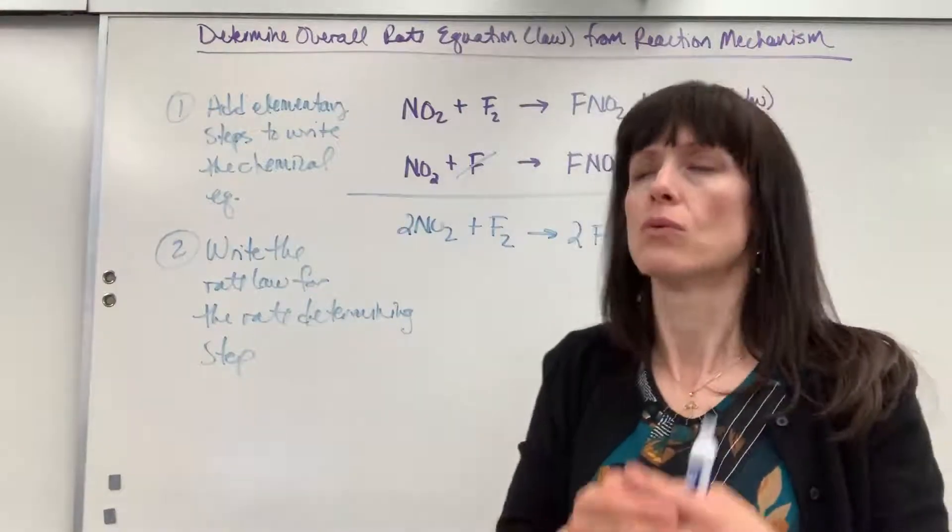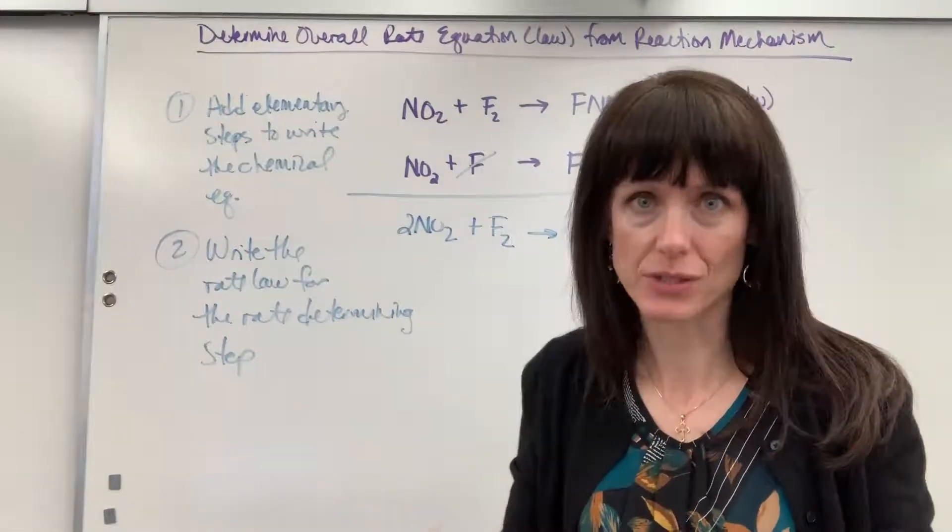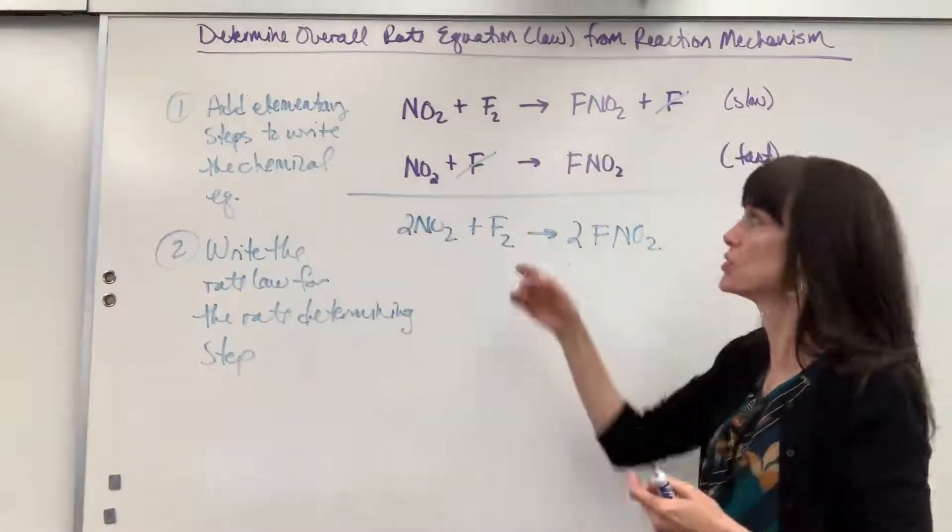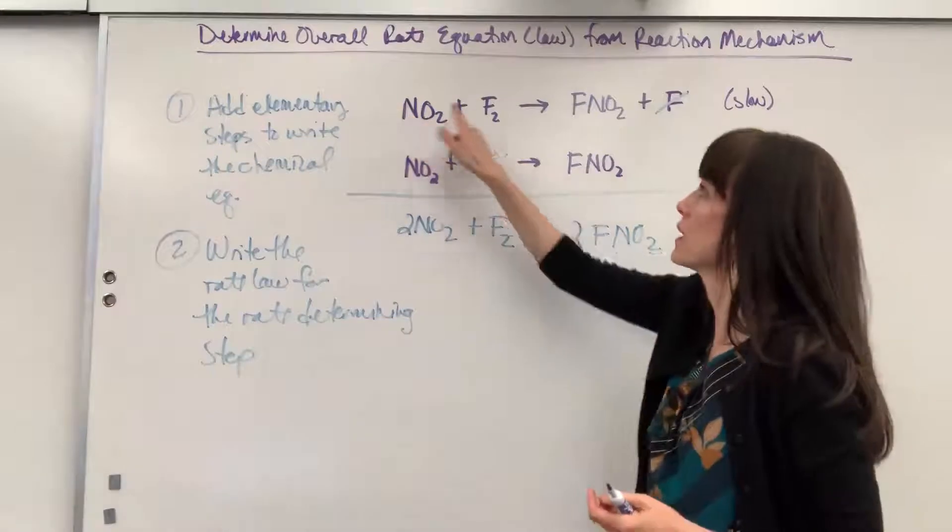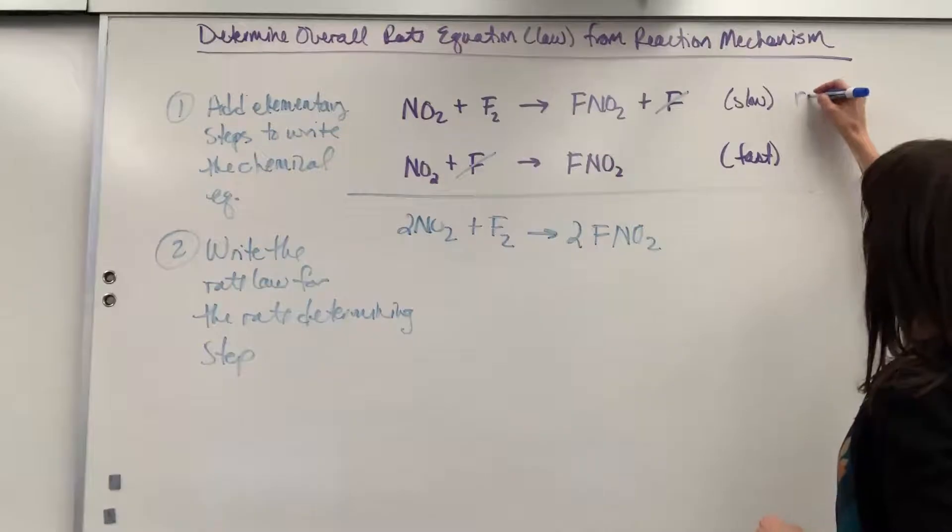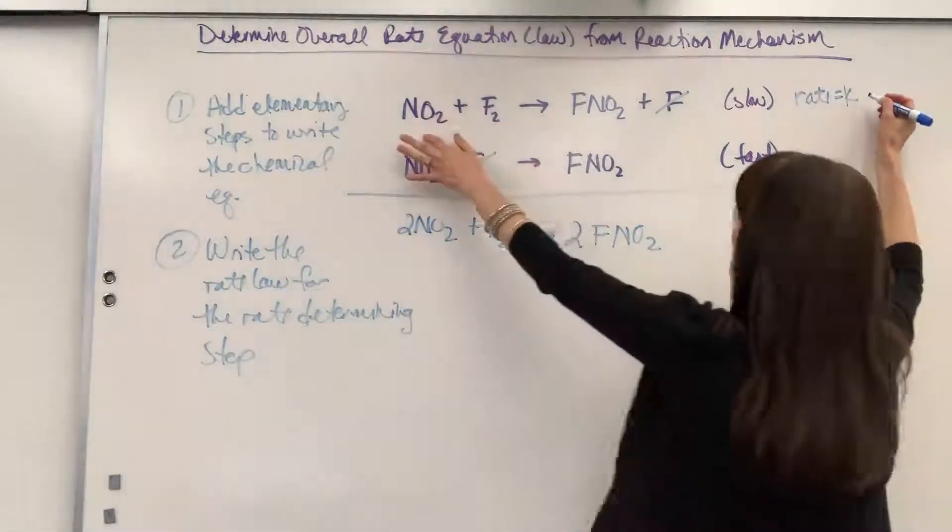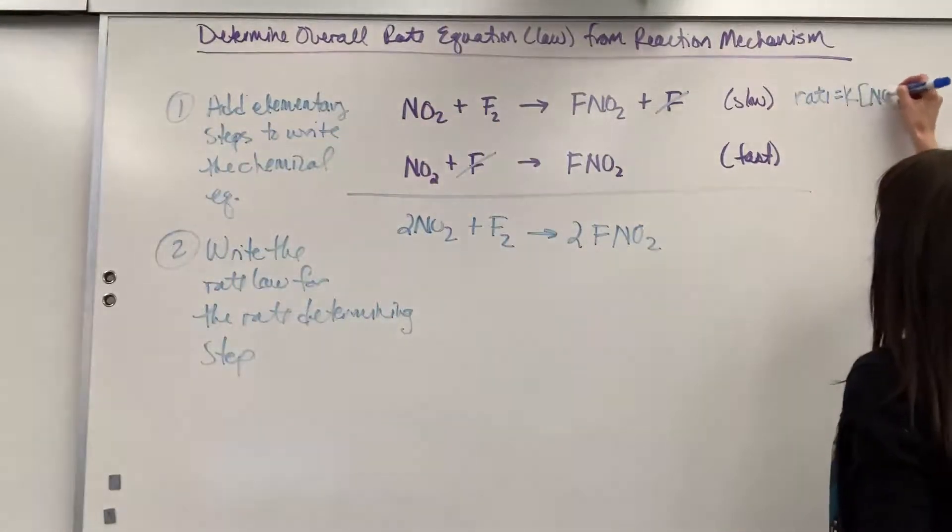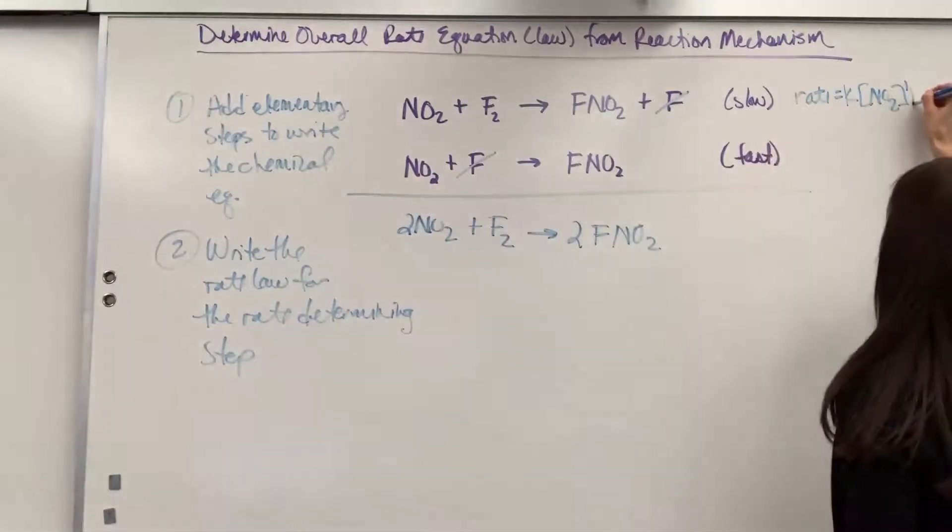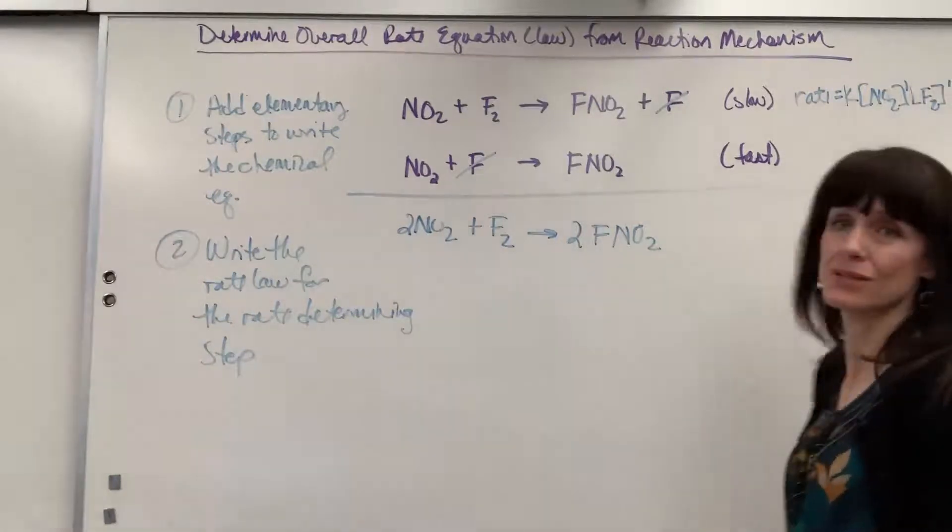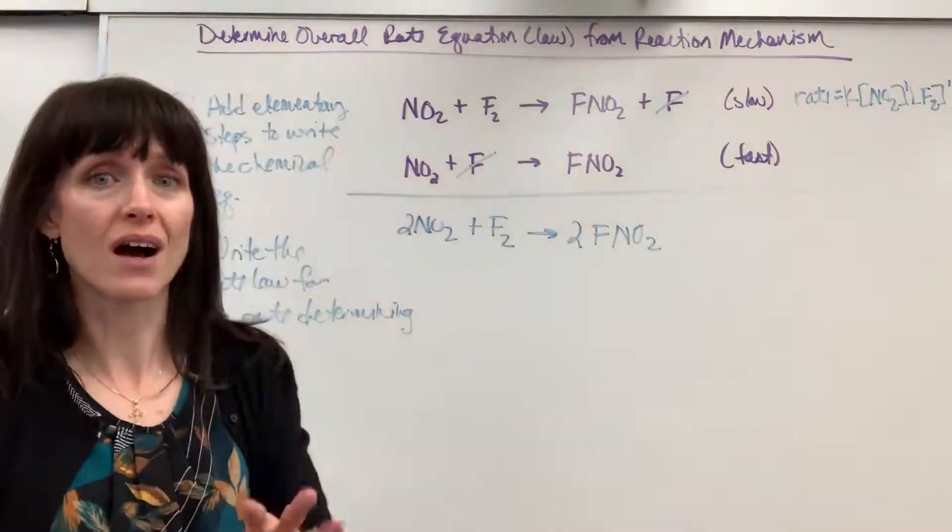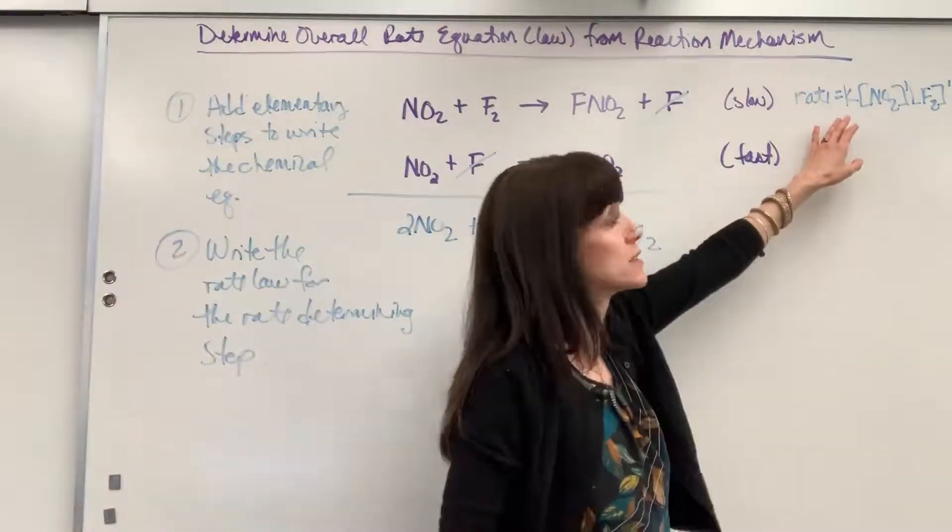If you have legitimate data, you have to use math to determine those exponents m and n. But because we're in the theory world, we can have this fudge and just take those coefficients as the exponents. So rate law will be rate equals k times concentration of NO2 to the first order, because that's understood to be a one, times the concentration of F2 also to the first order. So our overall rate law now depends on that rate determining step.